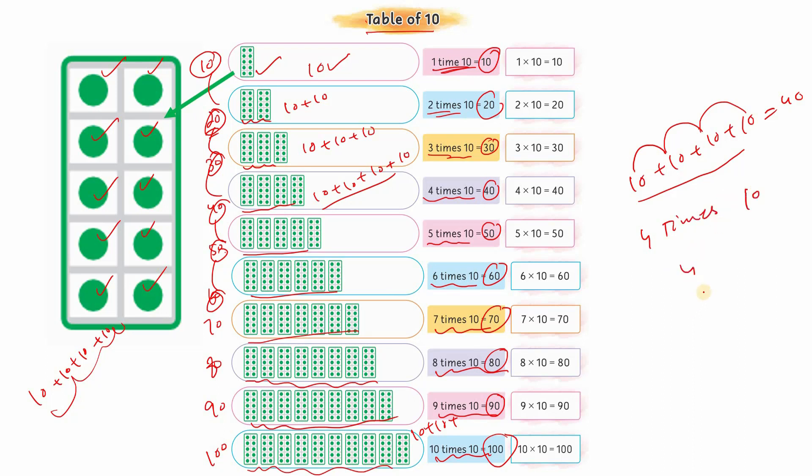To write four times ten mathematically, write it like this, or you can also write it like this. In both cases, what will the answer be? Forty.